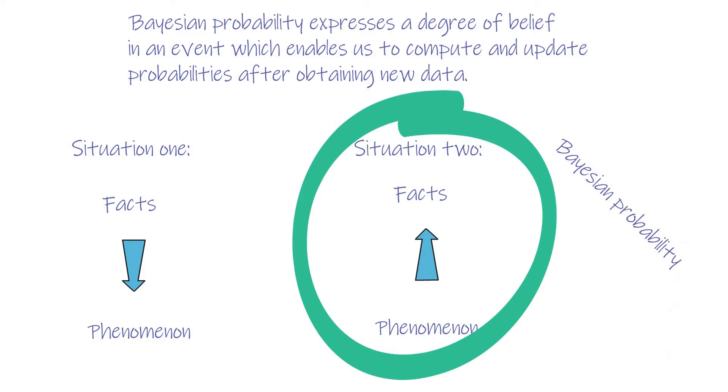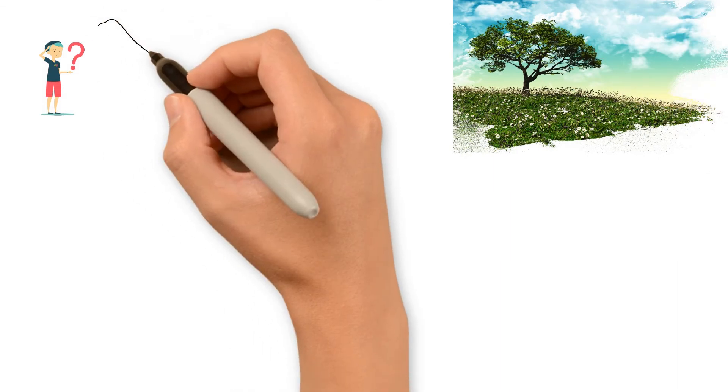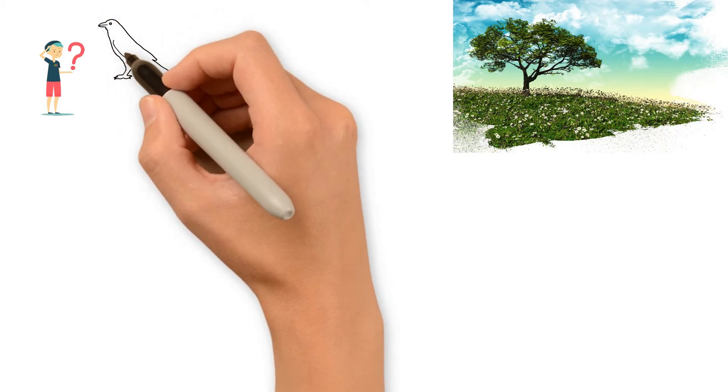One day, my son asked me on our way home, what's that thing on the tree? Is it a bird? Well, that's too far away from us, hard to tell. Let's move closer. Looks like a twisted leaf to me.